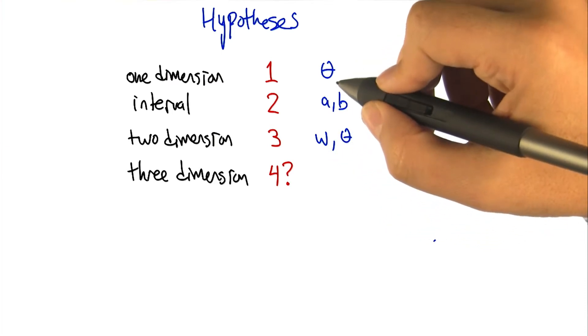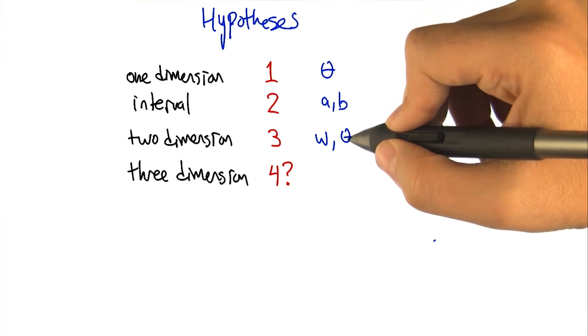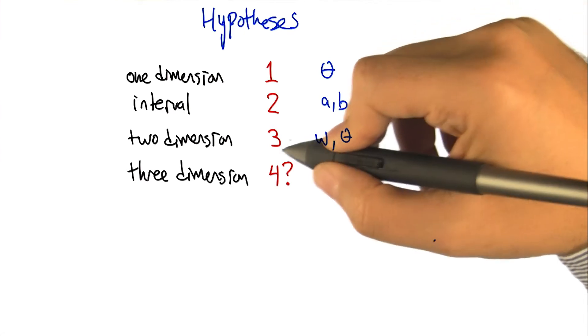So yeah, each time we went up to do a different example, we actually added another parameter. And it looks like the VC dimension is the number of parameters.